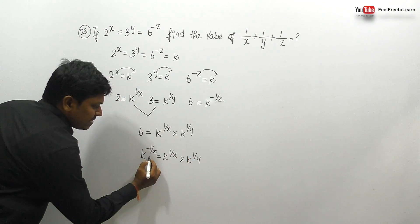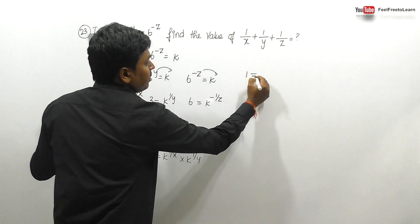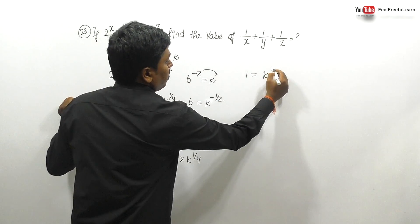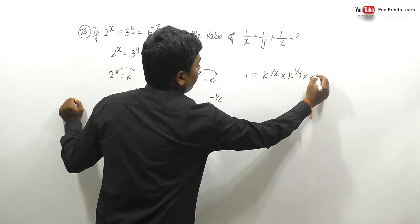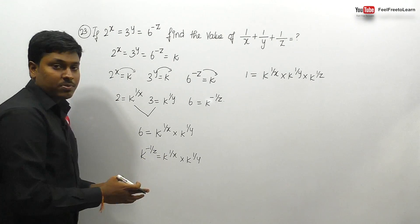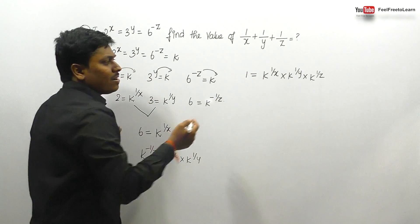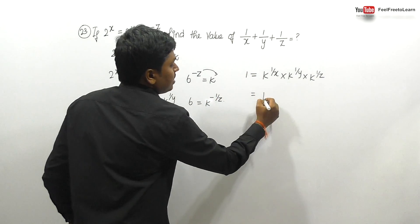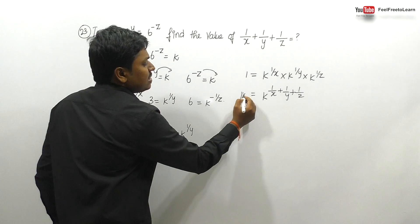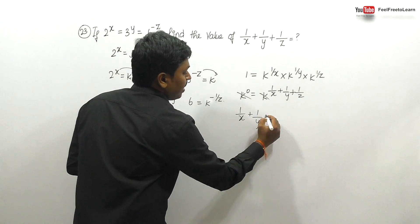Our target is 1/x + 1/y + 1/z. Bringing k^(-1/z) to the right-hand side: 1 = k^(1/x) · k^(1/y) · k^(1/z). Using the law of exponents, this becomes 1 = k^(1/x + 1/y + 1/z). Since anything to the power 0 is 1, k^0 = 1, so 1/x + 1/y + 1/z = 0.